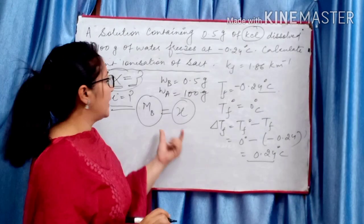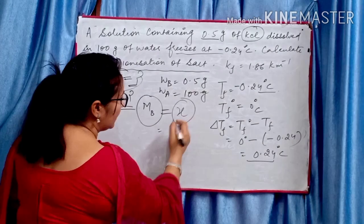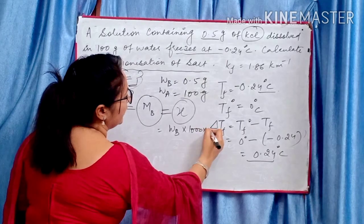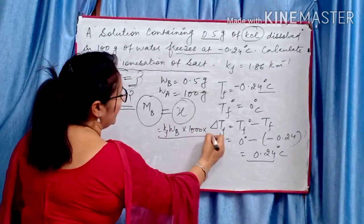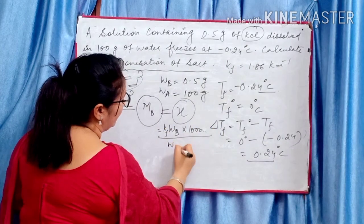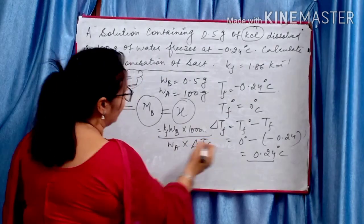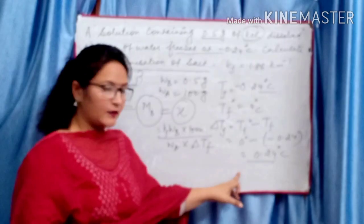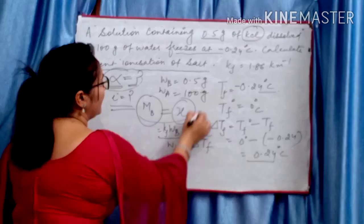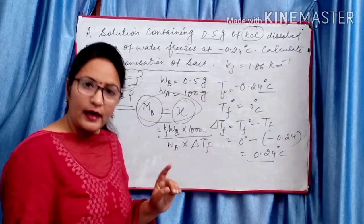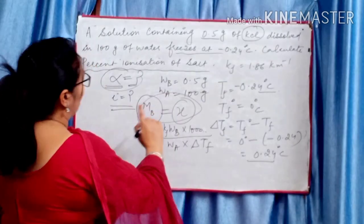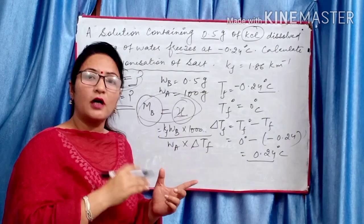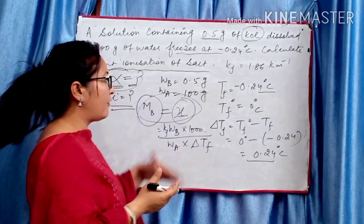The formula for MB is: WB × 1000 × Kf divided by WA × delta TF. Kf, WB, WA, and delta TF are all known. Substituting these values gives us the observed molar mass MB = X.